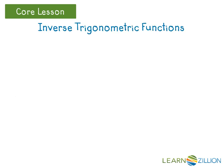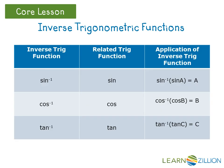Inverse trigonometric functions are functions that undo the trigonometric functions of sine, cosine, and tangent so that the angles that they reference can be isolated. Notice that the notation for inverse trig functions is very similar to the notation of the trig functions that they undo, but they have what looks like a negative-1 exponent. It is also important to note that the inverse sine is also referred to as the arc sine, the inverse cosine is referred to as the arc cosine, and the inverse tangent is known as the arc tangent.